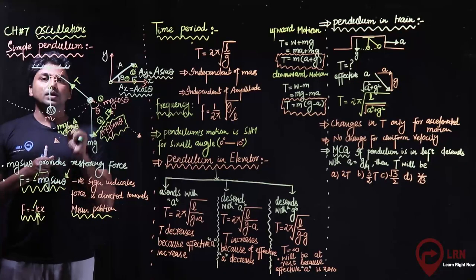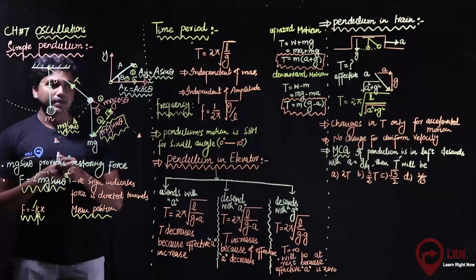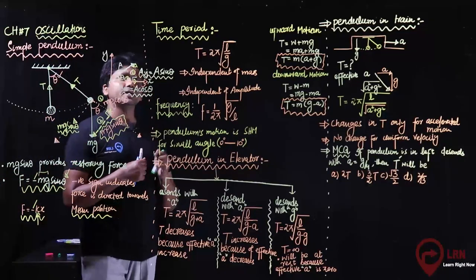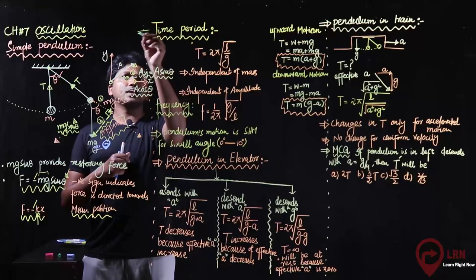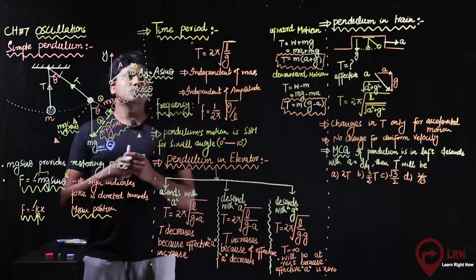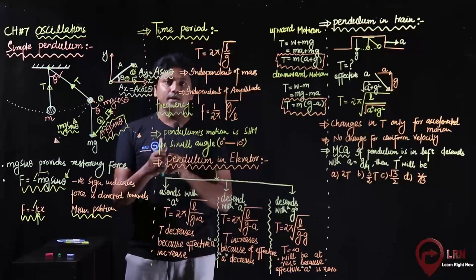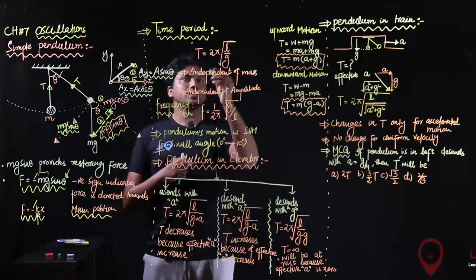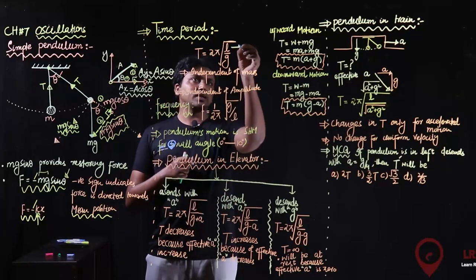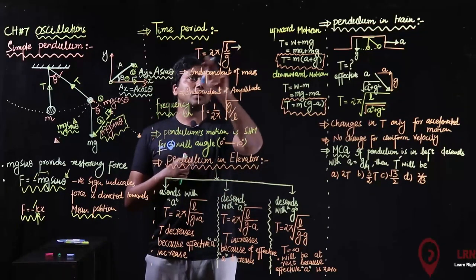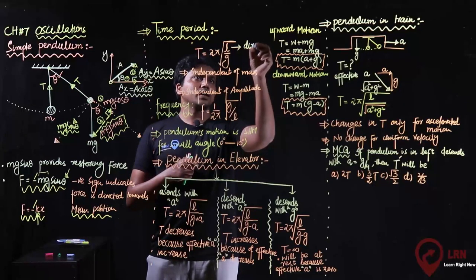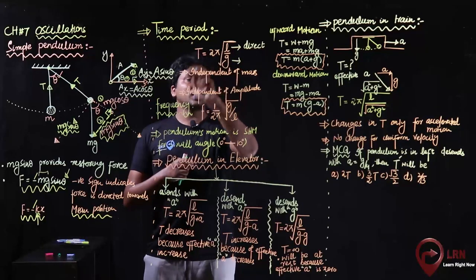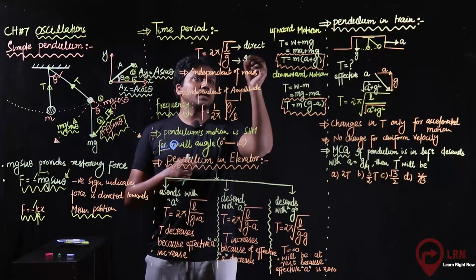In this way we have seen that the pendulum's motion is governed by mg sin theta. After that, we can see the formula for the time period of the pendulum. We will not derive it here — we will discuss it from the MCQ point of view. The formula is T = 2π√(L/g). The time period T and length L have a direct relation, and g and time period have an inverse relation.